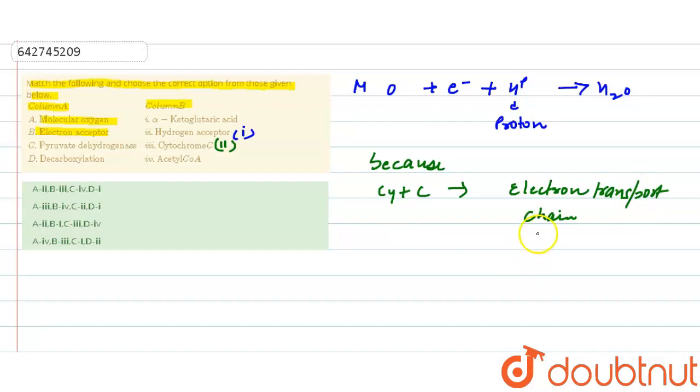In electron transport chain, there is electron acceptor which is mainly involved. So electron acceptor will be linked to cytochrome c. Moving to C, pyruvate dehydrogenase. We know that during the link reaction, what do you mean by link reaction? It is a reaction in which pyruvate...